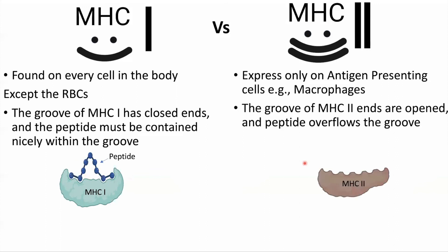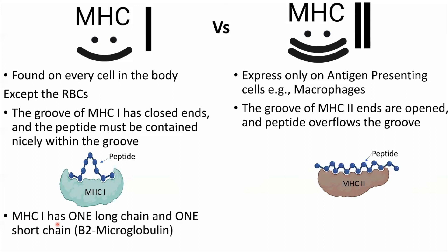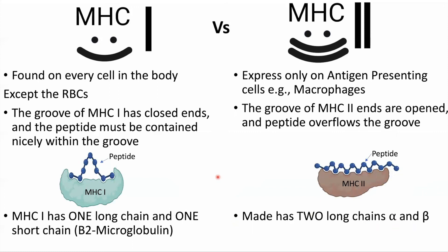In MHC class 2, the groove is open with no closed ends, and the peptides overflow the groove. MHC class 1 has one long chain and one short chain, while MHC class 2 has two long chains called alpha and beta. Thank you for watching this video — if you liked it, please hit like, share, and subscribe to see the next videos.